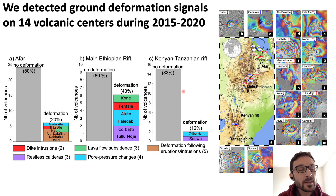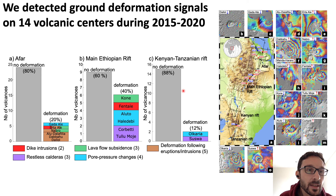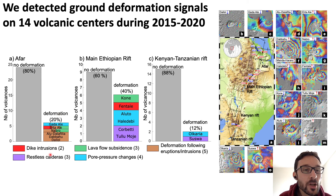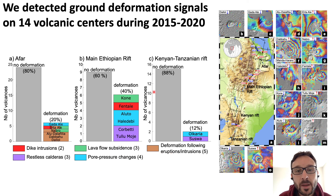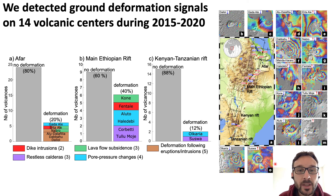To summarize: from our survey from 2015–2020, we detected 14 ground deformation signals related to very different processes — some related to dike intrusion, others to restless calderas, lava flow subsidence, deformation following eruption and intrusion, and pore pressure changes related to hydrothermal or geothermal systems. Here you see a snapshot of all the ground deformation signals we detected.